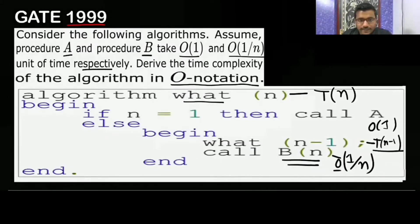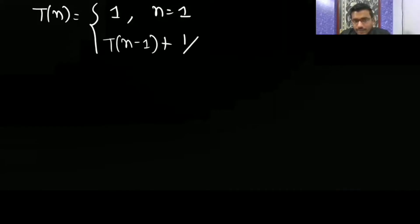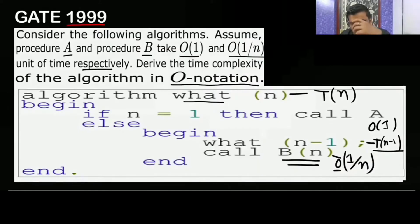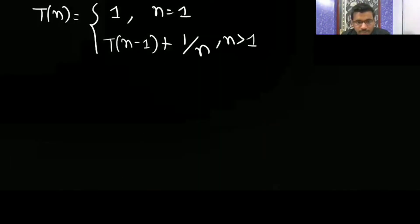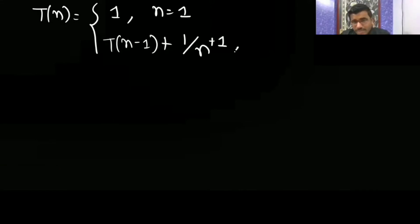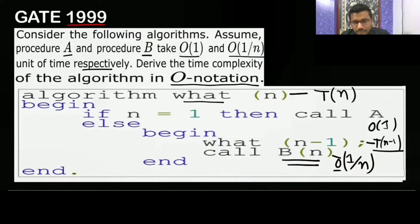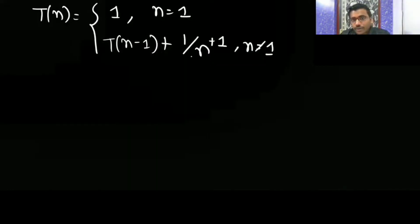Writing the recurrence equation: T(n) equals a constant when n equals 1. Otherwise, when n is greater than 1, T(n) equals T(n-1) plus 1/n, plus a constant c for the if-else check and the else block, which also takes some constant time.